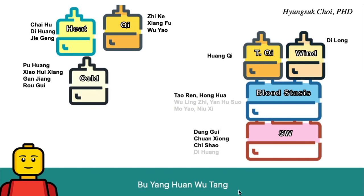Bu Yang Huan Wu Tang is very popular for stroke patients and is built in the same manner — with Siyutang as the foundation, blood stasis herbs like Taoren and Honghua, plus two additional herbs. Dilong is added for wind, since stroke is still related to wind. A large amount of Huangqi (120 grams) is added as a Qi tonifier, because Wang Chinren believed that cerebral vascular accident is related to Qi deficiency. Bu Yang Huan Wu Tang is another version of Chuyutang from Wang Chinren, specifically for stroke patients.